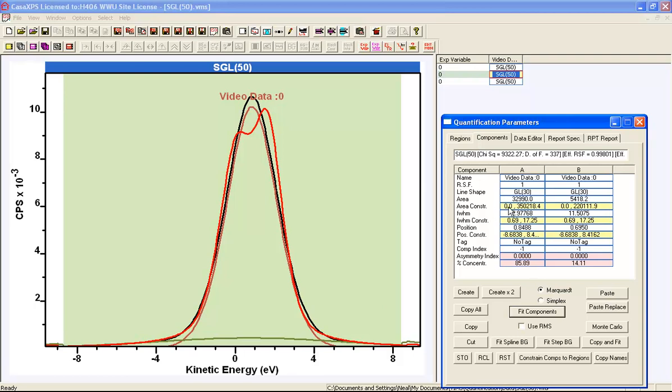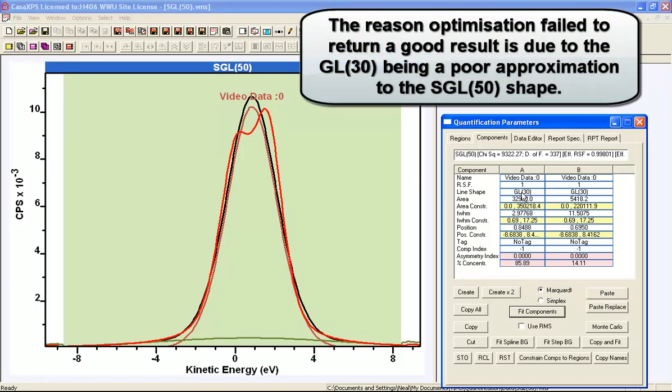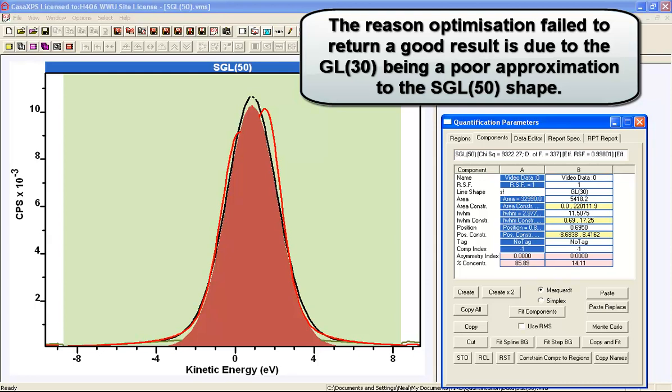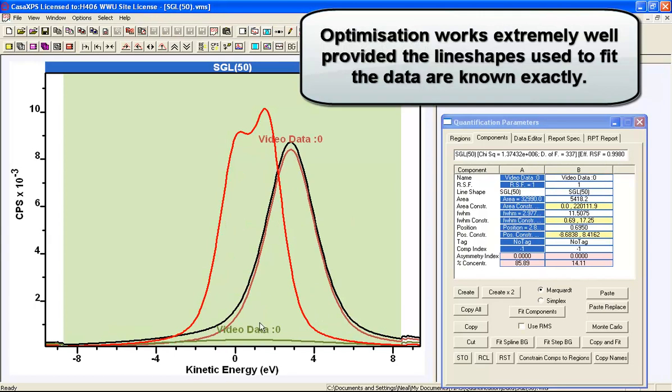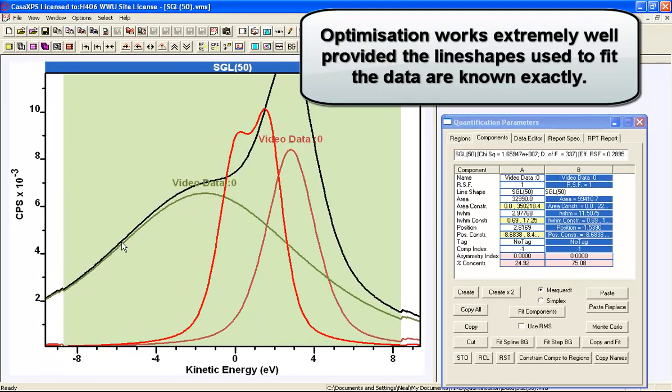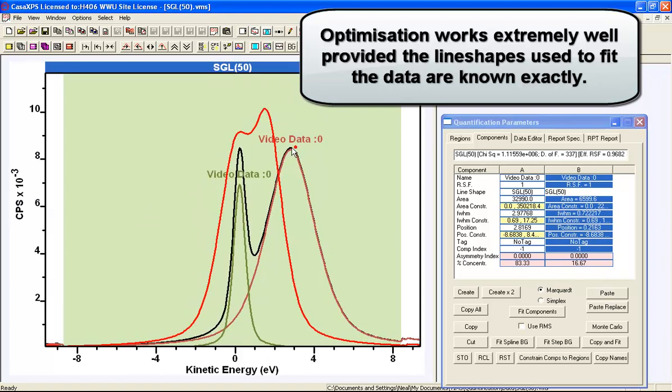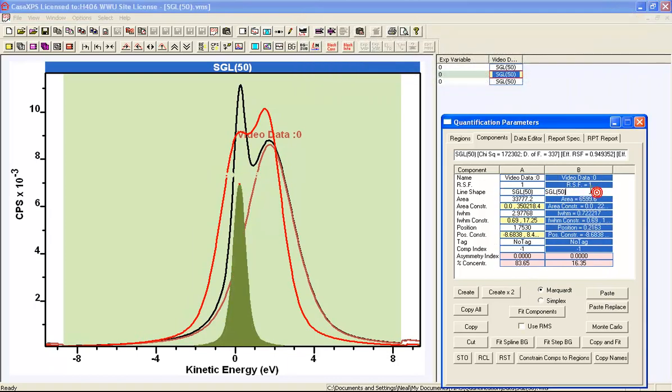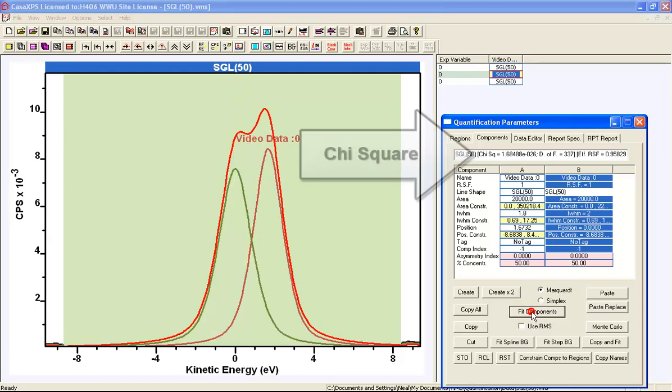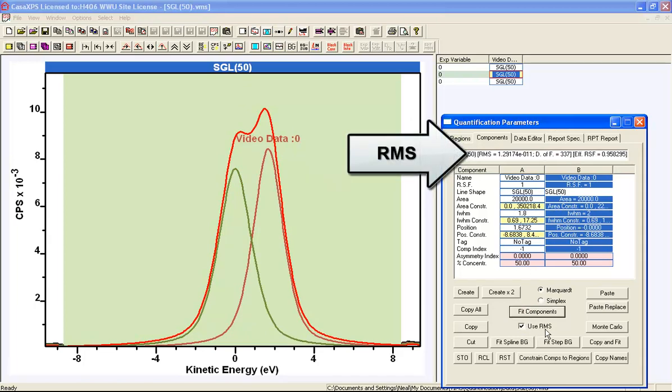Now this looks like optimization really doesn't work very well, however there is one situation where it works really very well. Rather than using GL30 which we know is not the line shape used in these data, we actually use the SGL50 which is the data. If I adjust this so that I've got a pair of peaks here, provided I use the correct line shape - and this is the very important point - the correct line shape will produce a very different result from an incorrect line shape, namely an almost exact answer, and it does it independently of whether you're using an RMS or a chi-square.